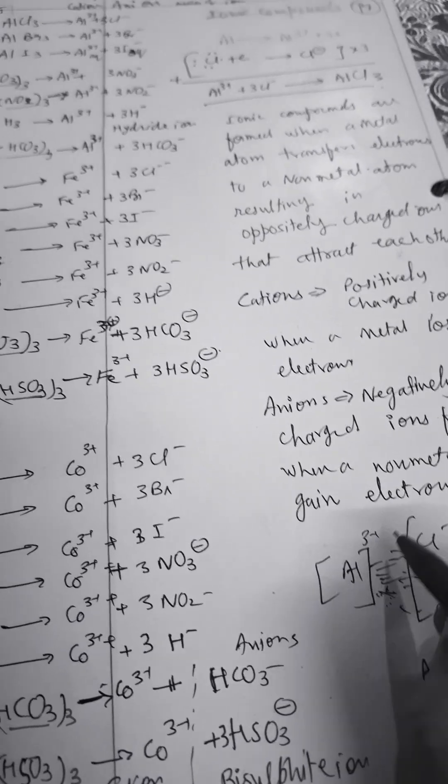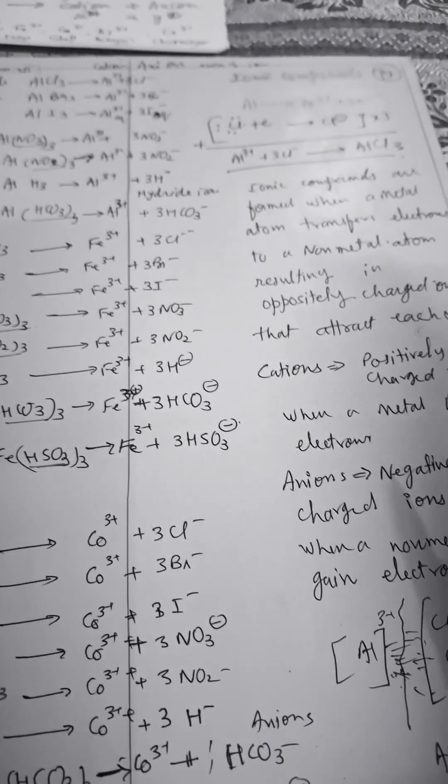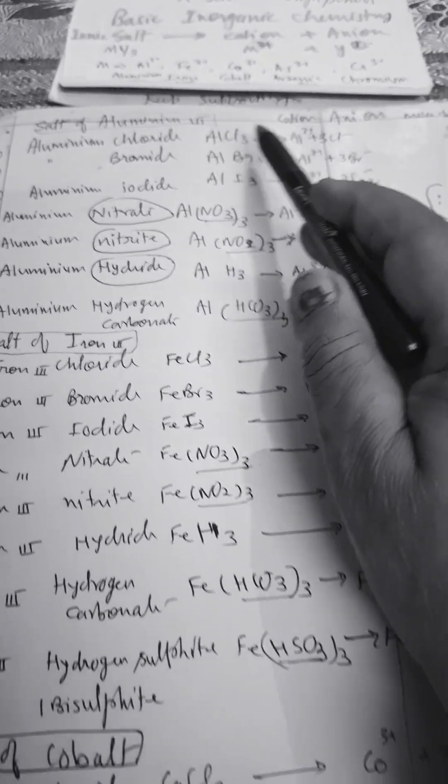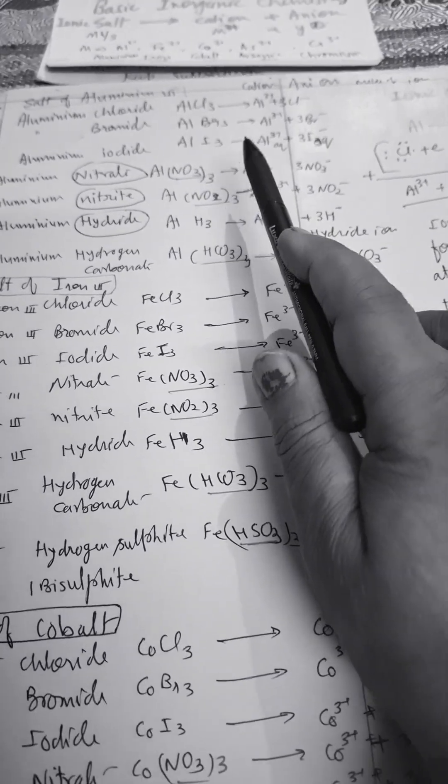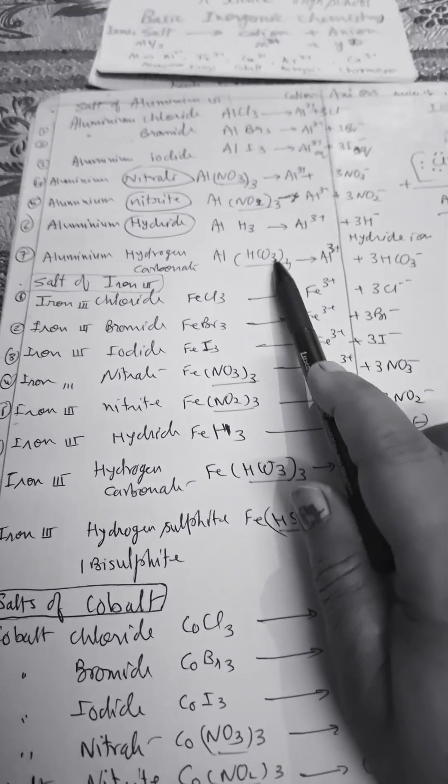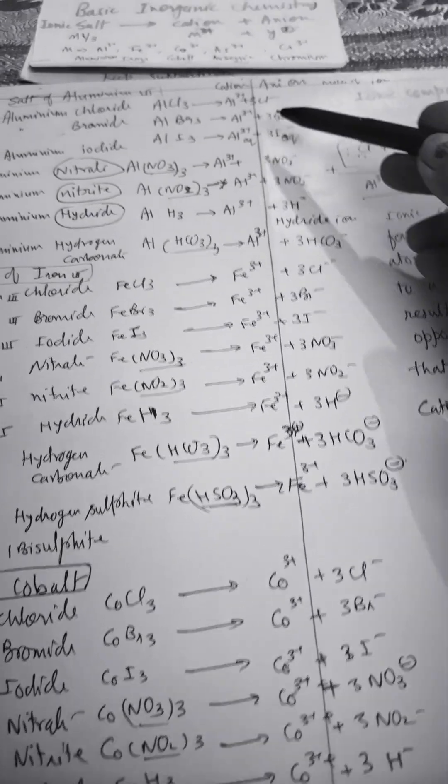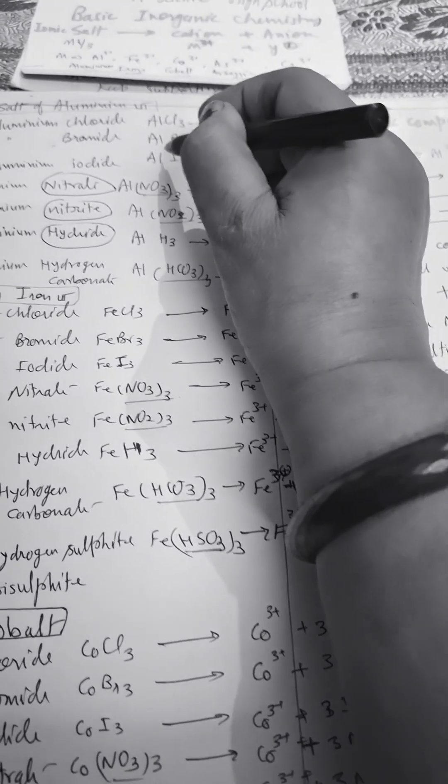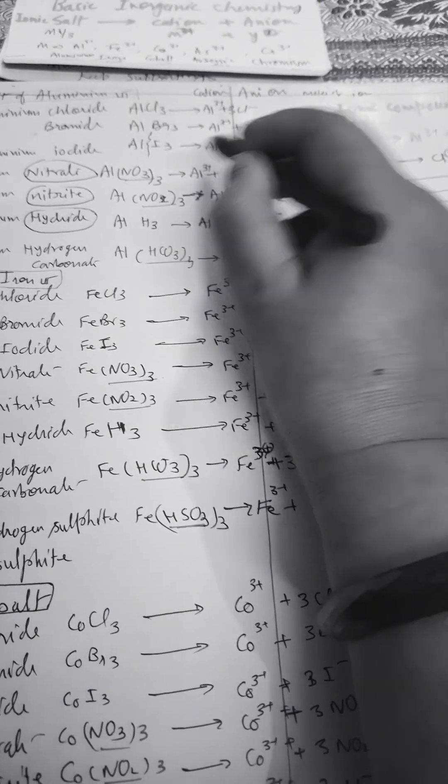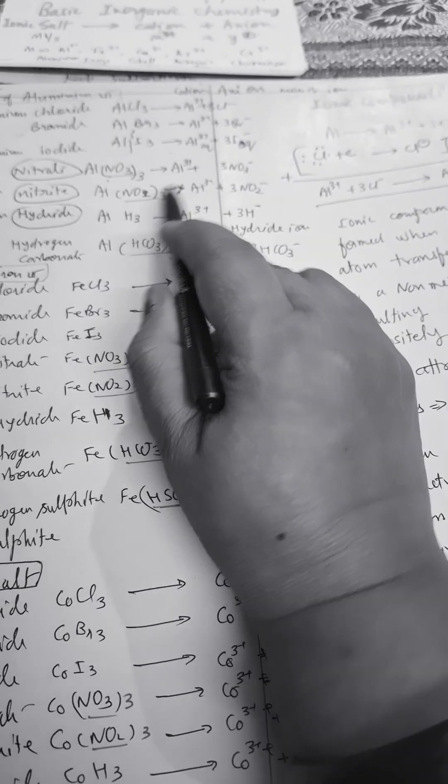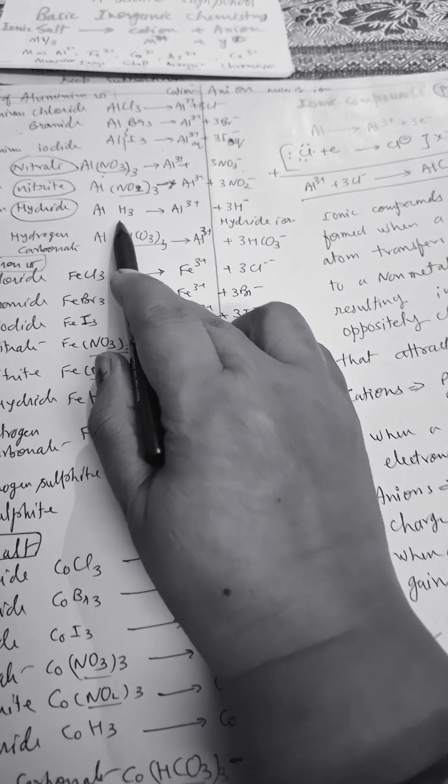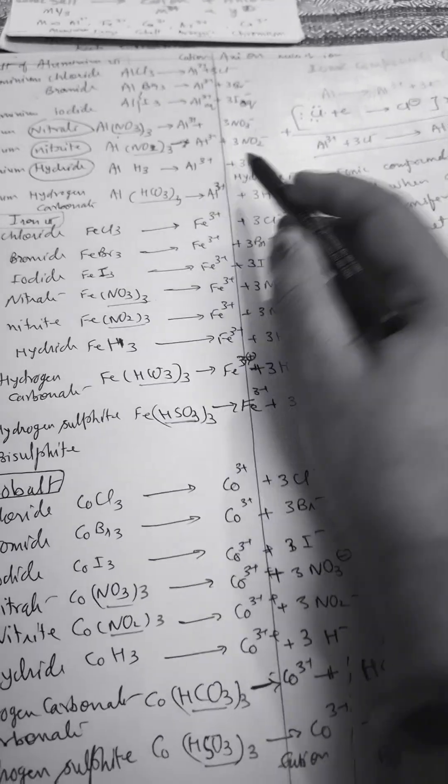In water they will cleave and will get separated. Al³⁺ and three negatives. Here I have shown aluminum chloride, aluminum bromide, aluminum iodide, aluminum nitrate, aluminum nitrite, aluminum hydride, aluminum hydrogen carbonate or bicarbonate. Here these are cations and these are anions. We have to cleave just like this: thrice of I⁻, thrice of NO₃⁻, thrice of NO₂⁻, thrice of H⁻. Like this you have to do all: CO₃, thrice of CO₃²⁻.